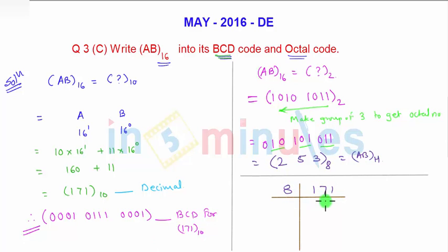This will be 8 into 21 and 3 is remaining. For 21, 8 twos are 16 and 5 is the reminder. You cannot divide 2 by 8 so this 2 can be written as it is.